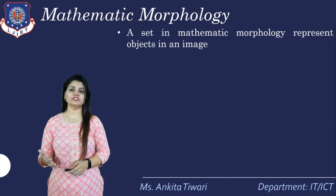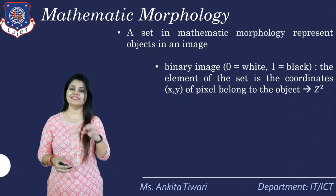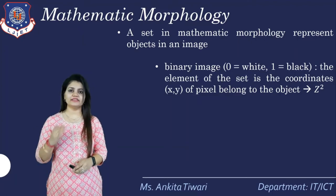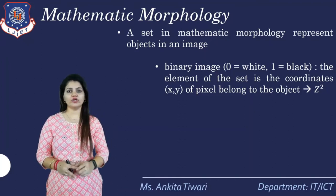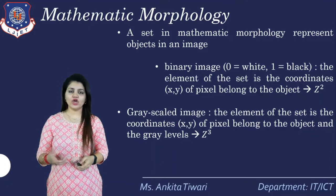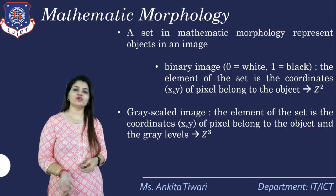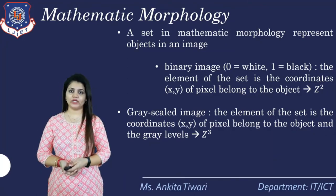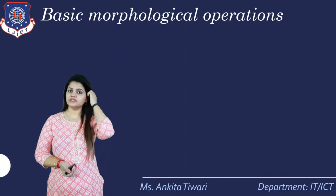Mathematical morphology represents objects in an image. For a binary image, zero stands for white and one stands for black. The element of the set is the coordinate (x, y) of a pixel belonging to the object, defined as Z² for 2D form. For grayscale images, the element includes coordinates (x, y) and gray scale levels, belonging to Z³.